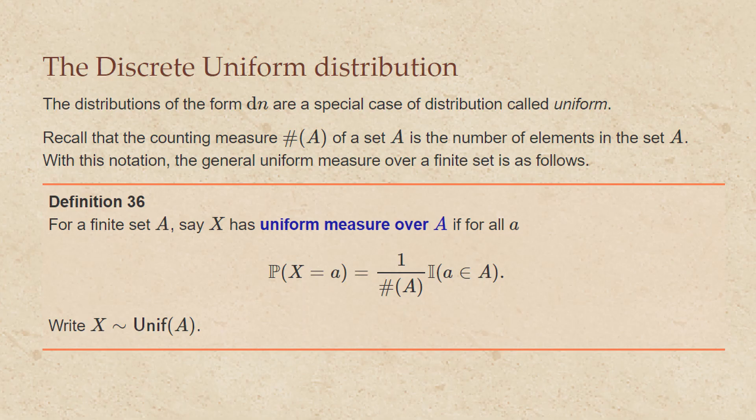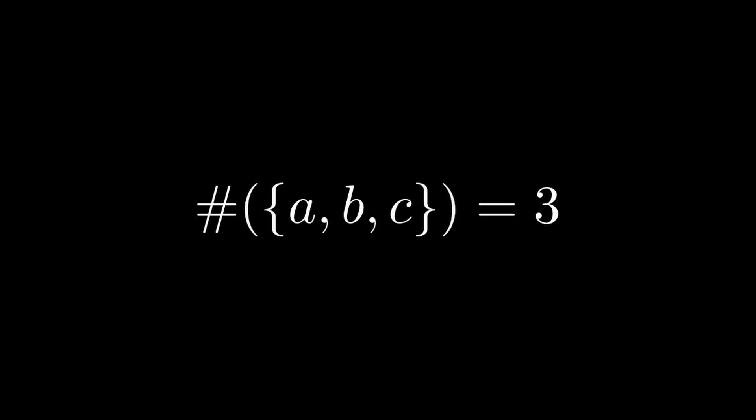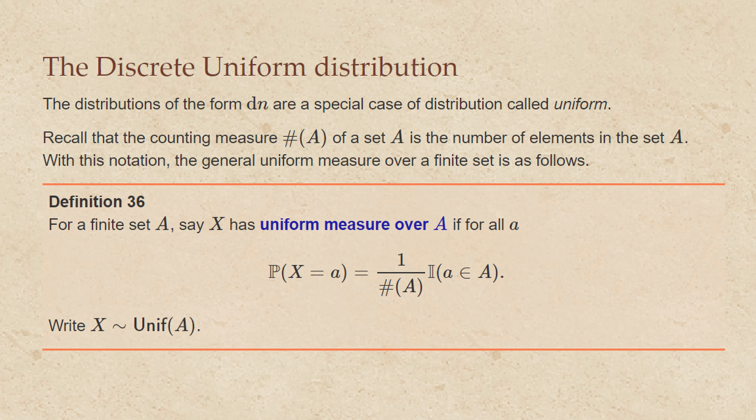The distributions of the form DN are a special case of distribution called uniform. Recall that the counting measure of a set A is the number of elements in the set A. For instance, the counting measure of {A, B, C} would be three. With this notation, the general uniform measure over a finite set is as follows. For a finite set A, say that x has uniform measure over A if, for all little a, the probability that x equals little a is 1 over the number of elements in A, times the indicator that little a is in big A.